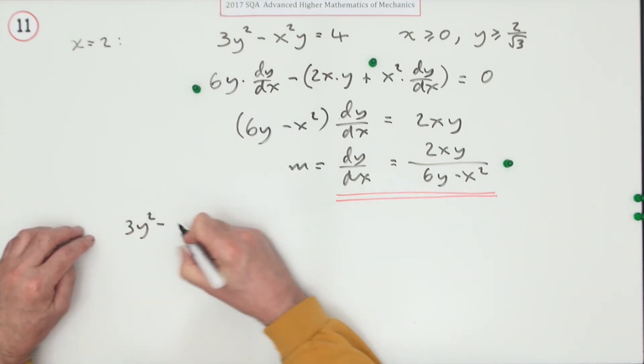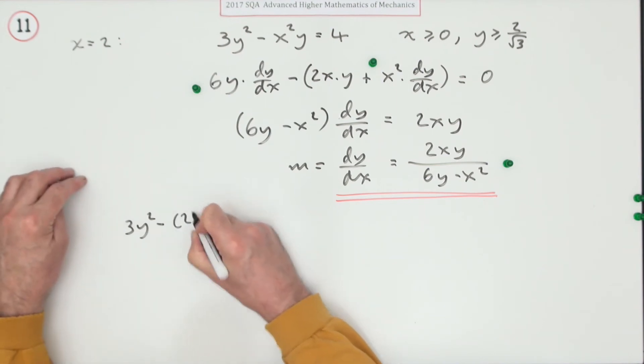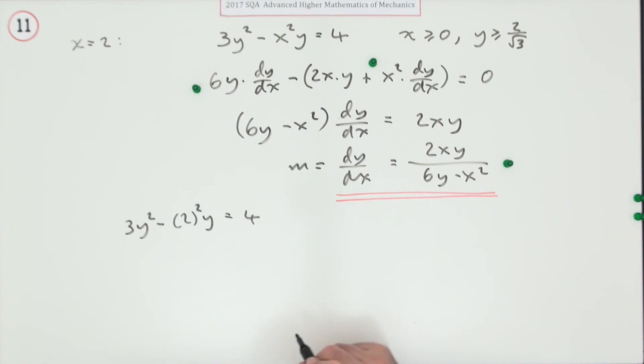3y^2 - (2^2)y + 4 = 0. This gives a quadratic in y: 3y^2 - 4y - 4 = 0.